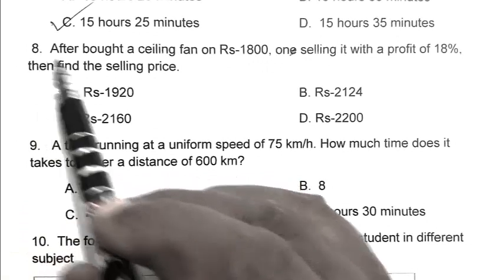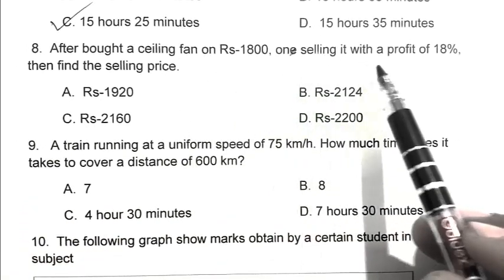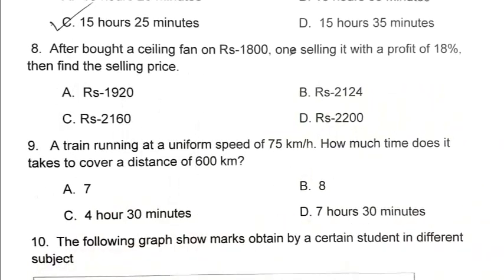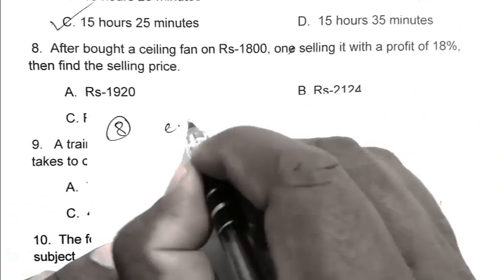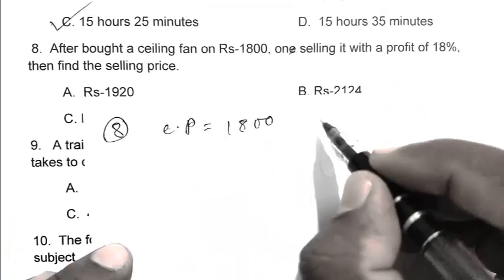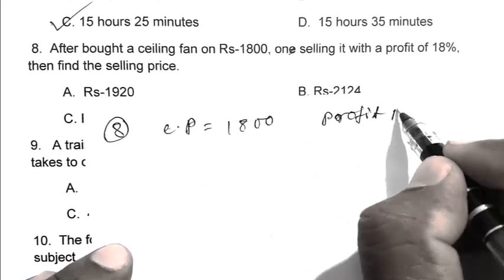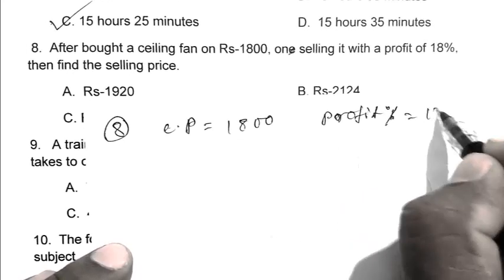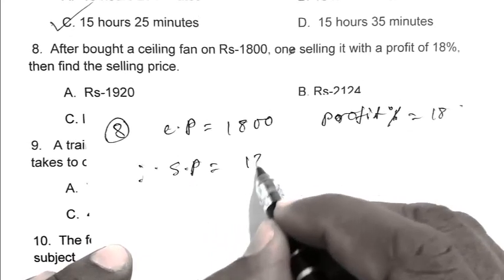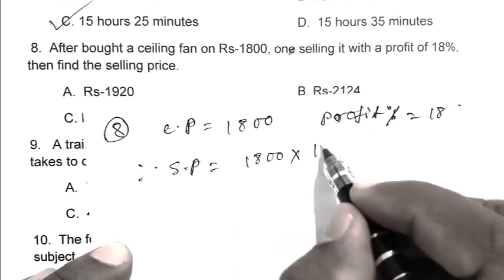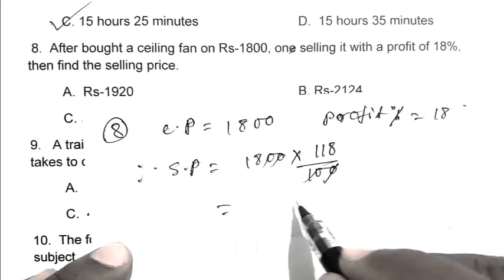Question number 8. After buying a fan for Rs. 1800, when selling it with a profit of 18%, then find the selling price. Cost price is 1800. Profit percent is 18. Selling price is 1800 multiplied by 118 upon 100.